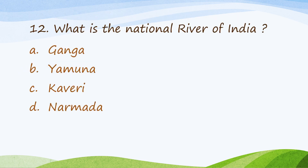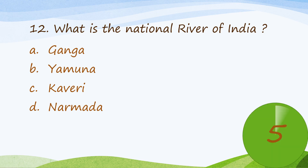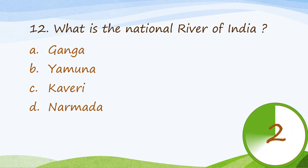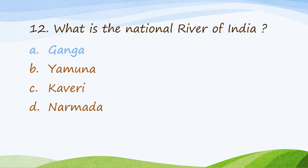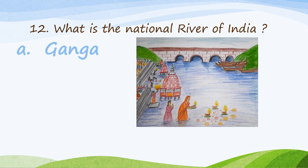Question 12: What is the national river of India? Option A, Ganga. Option B, Yamuna. Option C, Kaveri. Option D, Narmada. The correct answer is Option A, Ganga.